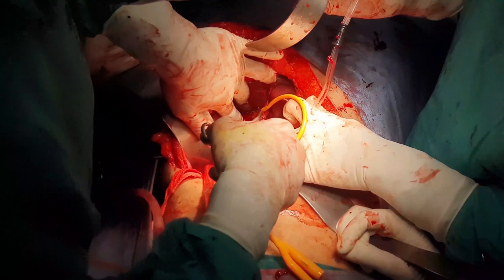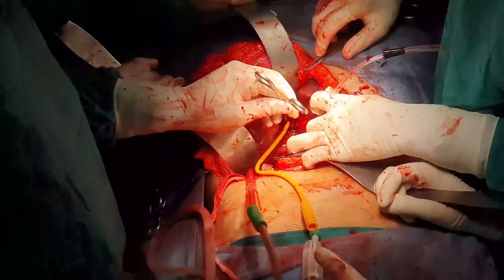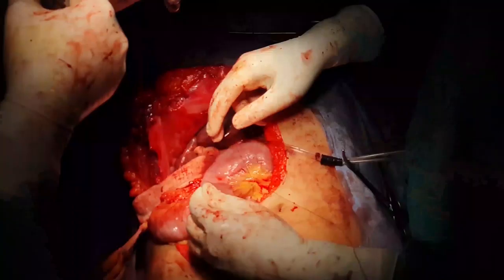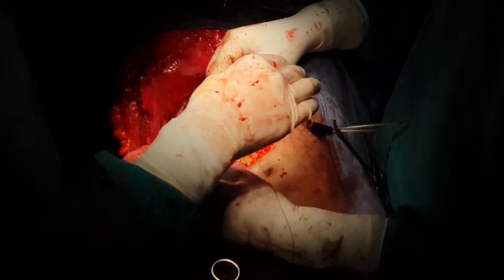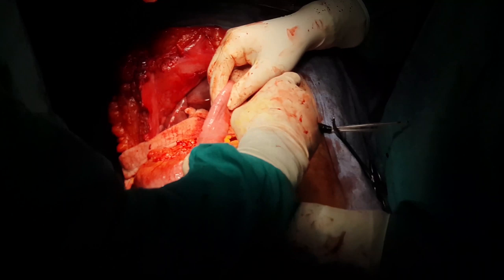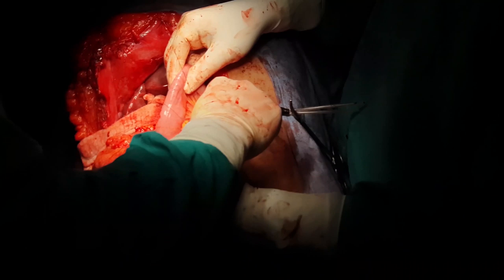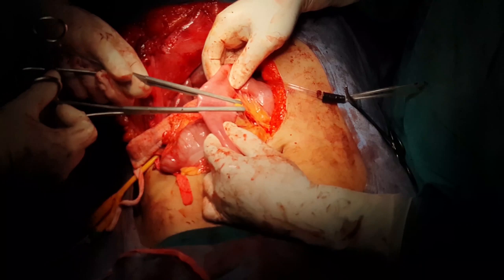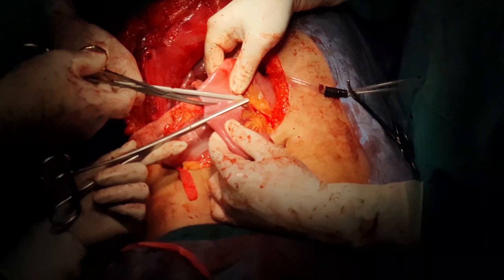During extraction and lithotripsy of intrahepatic stones, intrabiliary bleeding occurred. This was tackled by inserting a Foley catheter and inflating the balloon with 10 ml of saline. The basic principle is taken from the Sengstaken-Blakemore tube used in esophageal bleeding. 20 cm from the duodenojejunal flexure, the jejunum was measured and prepared for transection. A mesenteric window was carefully created.